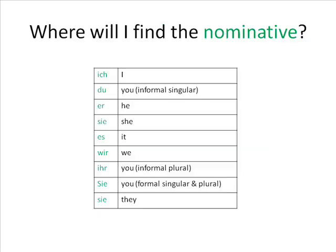With pronouns too, it's pretty simple — it's the first form you're likely to have learnt of them. So: ich meaning I; du meaning you in informal singular; er, sie, es meaning he, she, it; wir meaning we; ihr meaning you in informal plural; Sie meaning you formal; and sie meaning they — are the nominative personal pronouns.